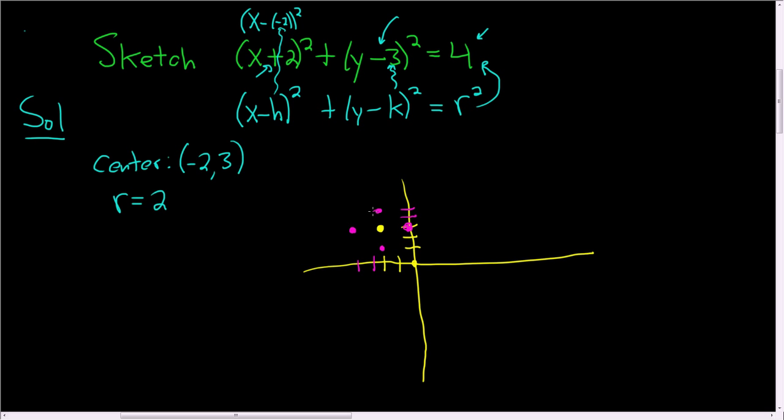And then you connect the dots, and you make a circular object. And this is the part where I always have a hard time. That's pretty good. So there is our circle. I hope that made sense.